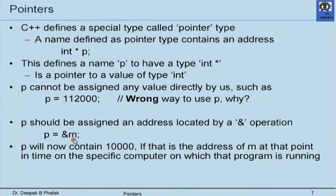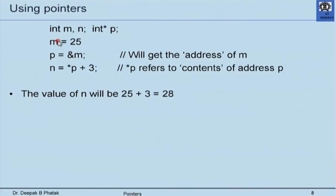A valid address must be calculated by C/C++ only — you cannot know what any address is. This can be found by saying p = &m. Once we have a valid address, numerical operations on p are possible. Here is a code example: int m, n; int* p; m = 25; p = &m; n = *p + 3. This is valid because *p is the dereferencing operator — *p means the value at the location pointed to by p, which is m, whose value is 25. So 25 + 3 = 28 is assigned to n.